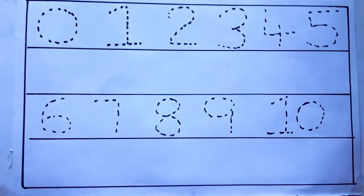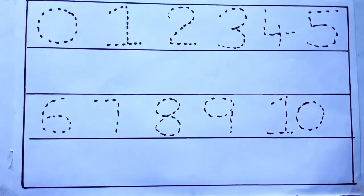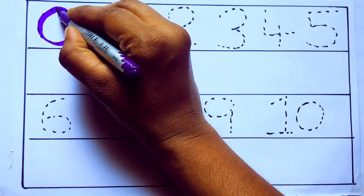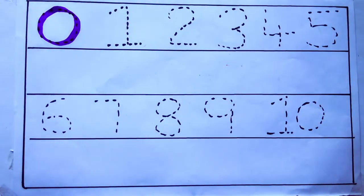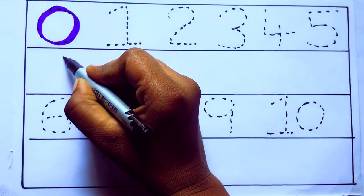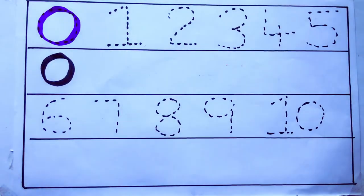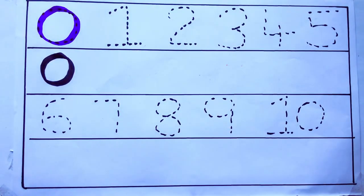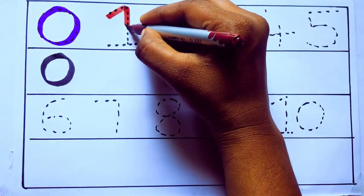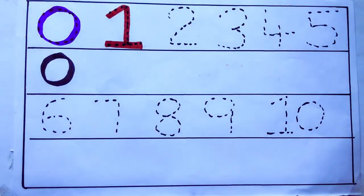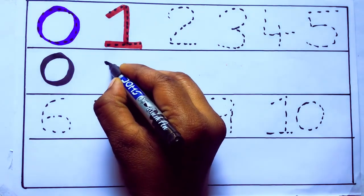Let's draw numbers. Violet color 0, Z-E-R-O, 0, number 0. Brown color 1, O-N-E, 1, number 1.